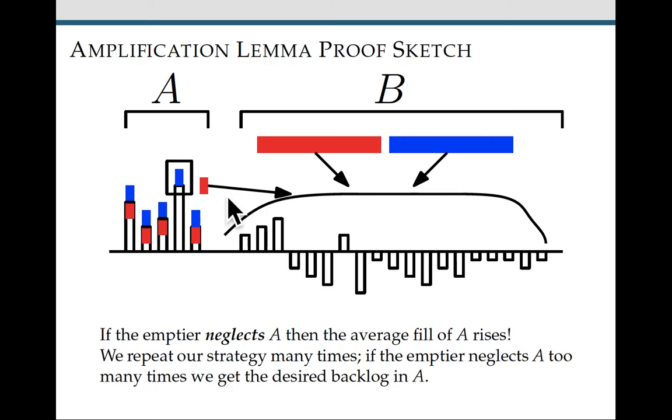On the other hand, if the emptier doesn't neglect a, then the resources placed into b by the filler and the emptier are matched, they're equal. So that means that we can apply f to b, we get a cup with high fill, and swap it into a. Either way, we're getting high fill.